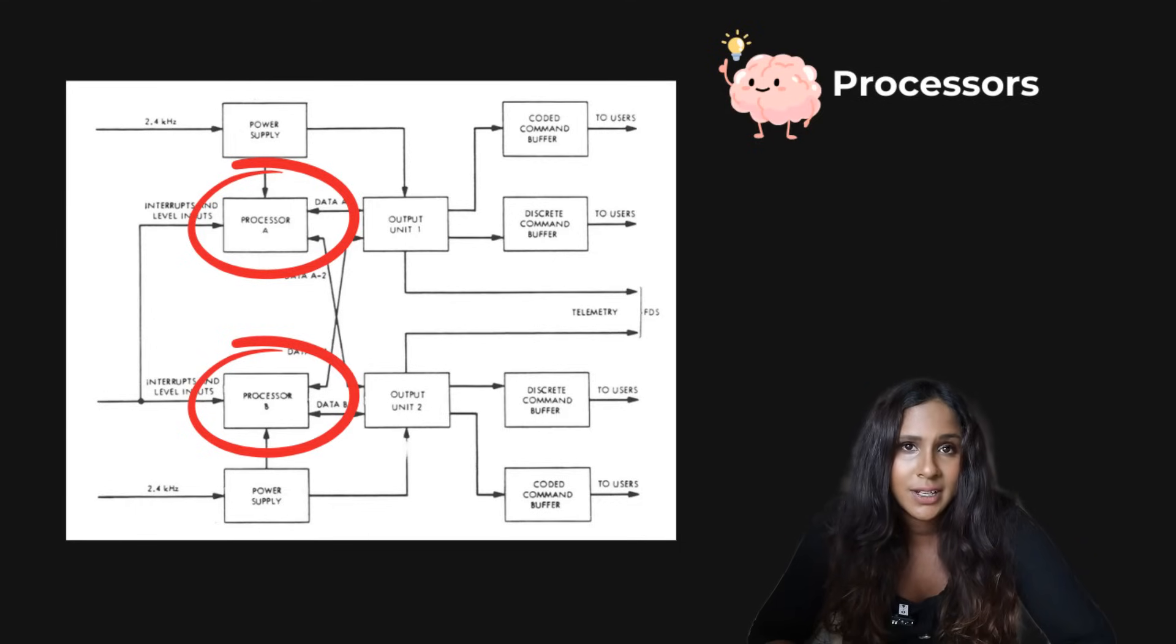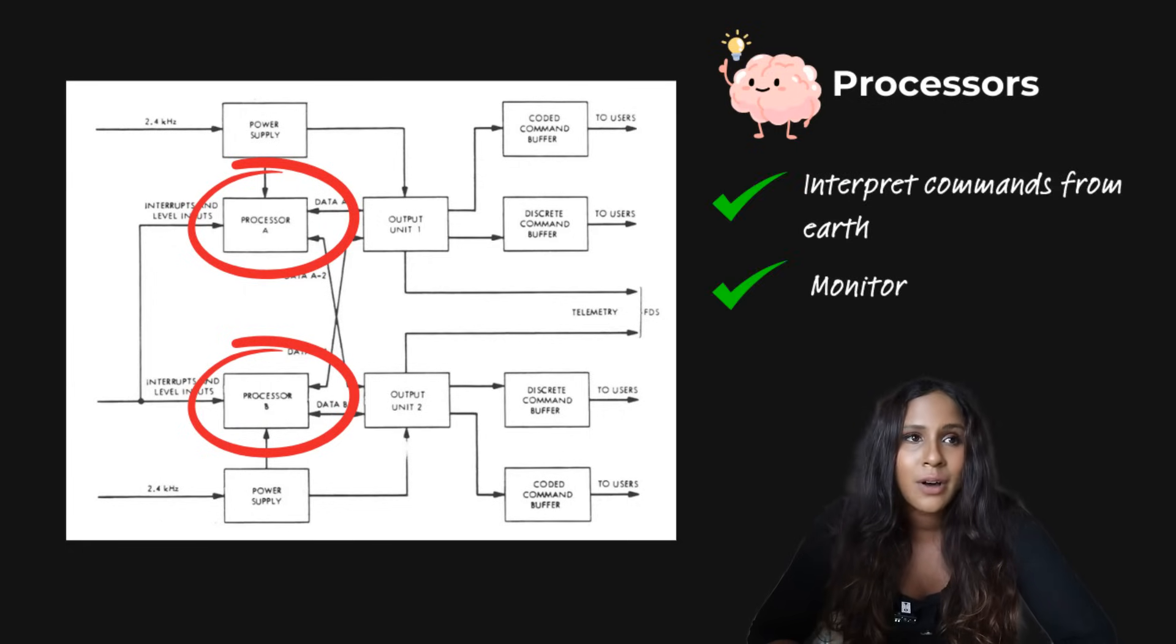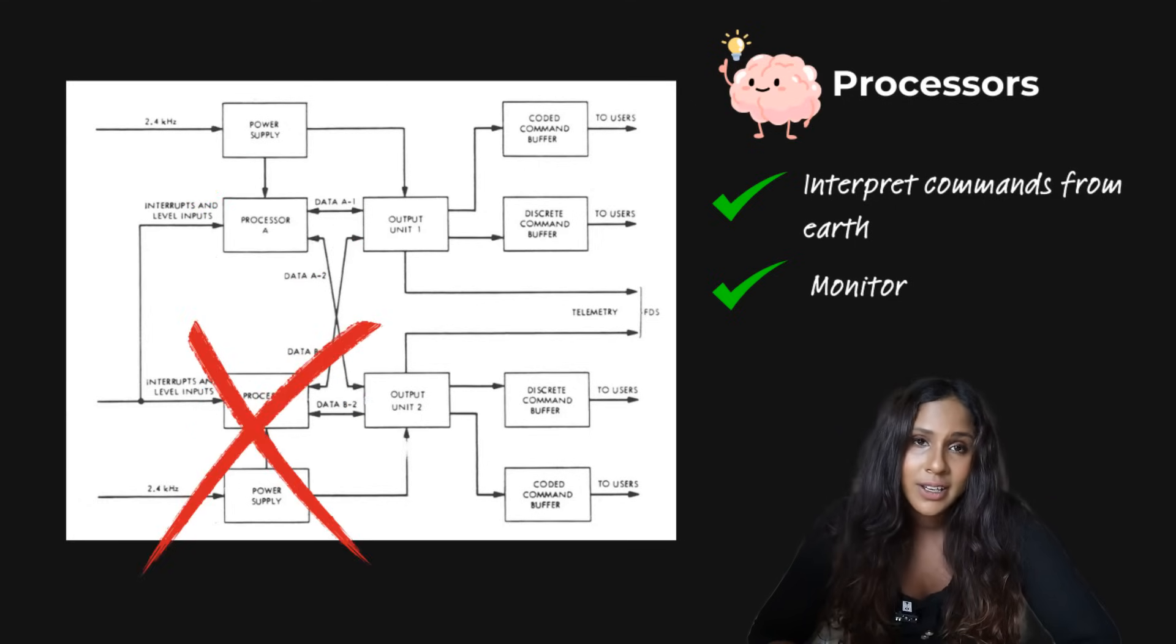You then get the processors, processor A and processor B. This acts as the brains of the operation. And these processors interpret commands from Earth and execute tasks. They also monitor the spacecraft systems to ensure that everything is working as it should be. Again, two processors are here because if one fails, the other one can take over.